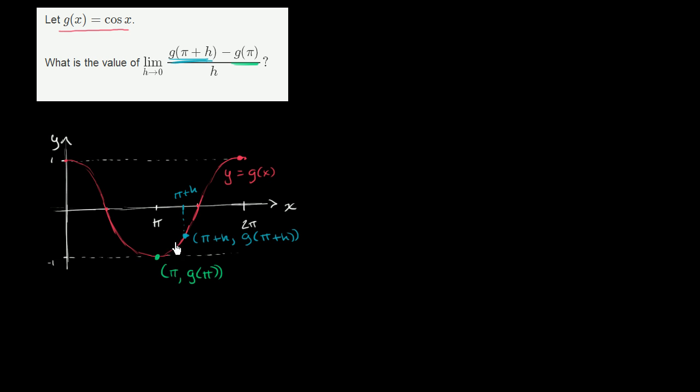And they're essentially trying to find the slope between these two points. If we wanted to find the slope between these points, it would be change in our y value over change in x, or change in the vertical over change in the horizontal. What is our change in the vertical? Well, the change in the vertical will take this y value here, so g(π + h), and subtract this y value here, minus g(π). So that was our change in the vertical over the change in the horizontal.